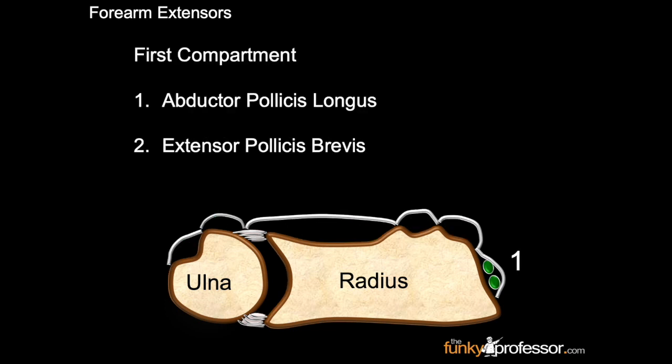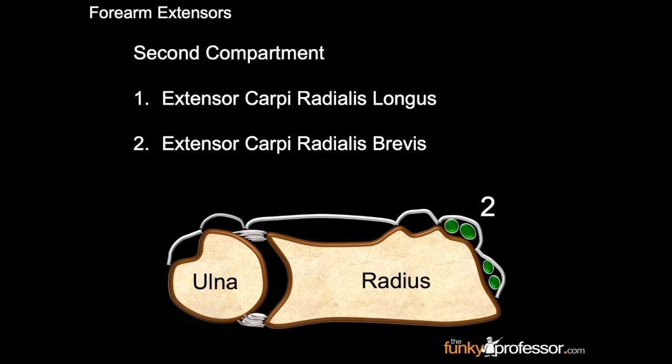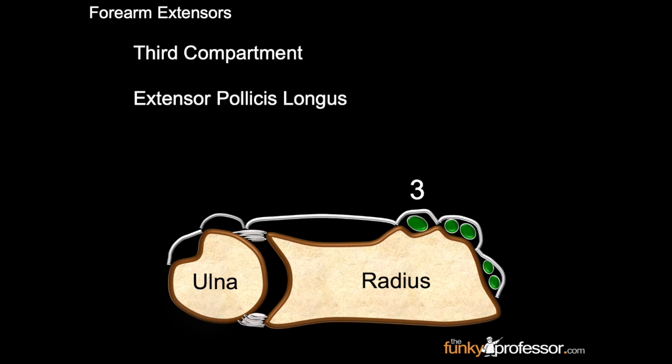The first compartment contains the abductor pollicis longus and the extensor pollicis brevis. The second compartment contains extensor carpi radialis longus and extensor carpi radialis brevis. The third compartment contains extensor pollicis longus.